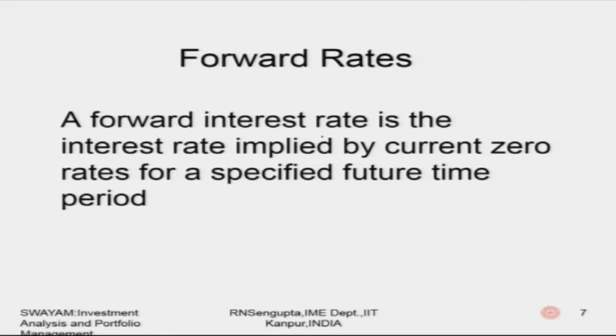Now I want to find out the forward interest rate. The forward interest rate is the interest rate implied by the current zero interest rates for a specified future period of time. For example, if the zero rate is known for one year and two years, we may want to find the rate between the end of the first year and the beginning of the second year, or between year one and year 1.5.